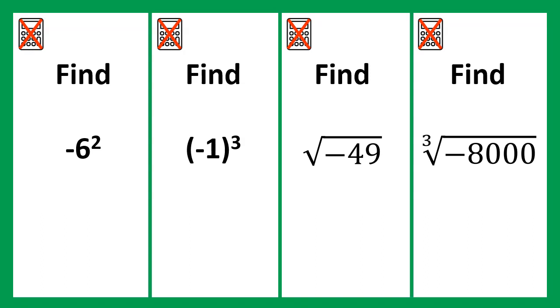Notice with the first one the negative 6 is not in a bracket. Therefore we won't be squaring negative 6. With this question we actually need to use BIDMAS and do the indices first. So we first need to work out what 6 squared is. And then this would be the negative of that. So this one would actually be negative 36.